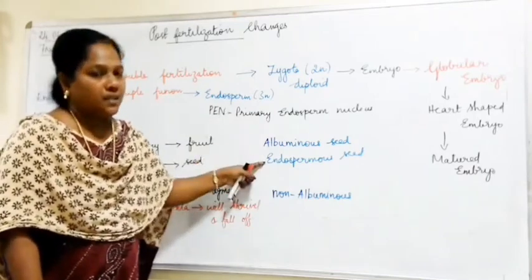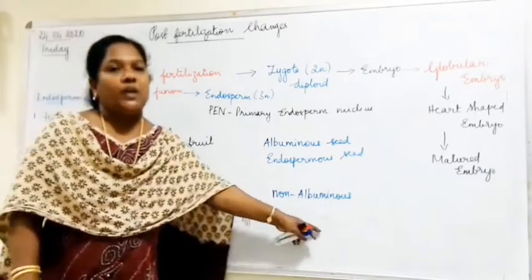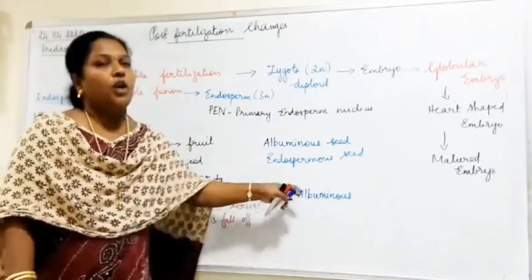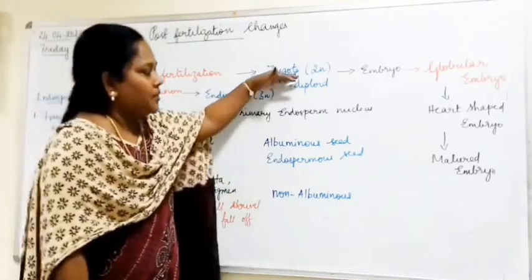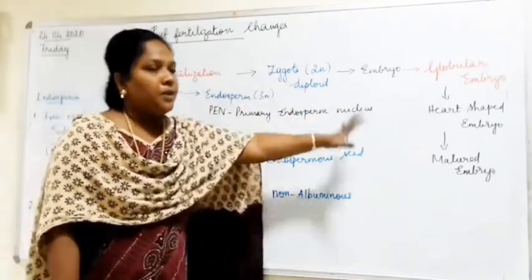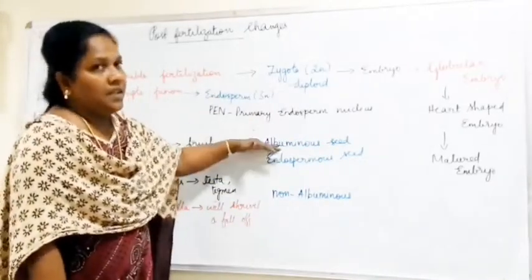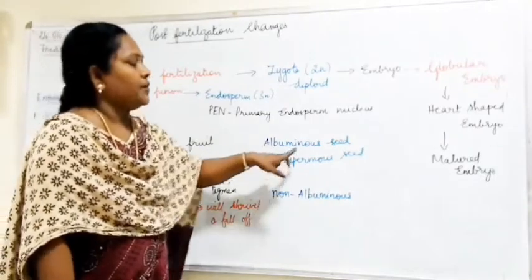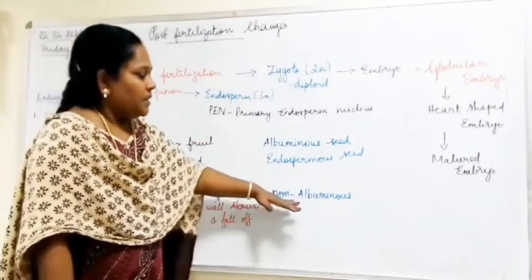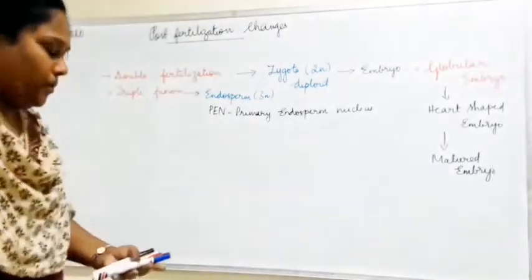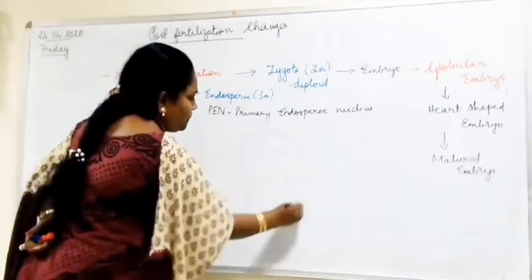If the endosperm is fully consumed during seed development and nothing remains, the seed is called a non-albuminous seed. Examples of non-albuminous seeds are pea and groundnut.